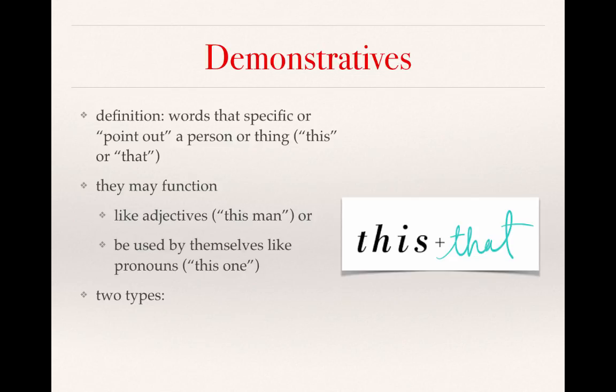There are two types of demonstratives: near demonstratives — this — which is the Greek word houtos, and far demonstratives — that — which is the Greek word ekeinos.